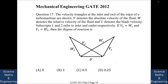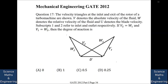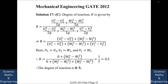For a turbomachine where V2 = W1 and V1 = W2, the degree of reaction is asked. Using the degree of reaction formula R and noting from the velocity triangles that u1 = u2, substituting gives R = (W2² − W1²) / [(W2² − W1²) + (W2² − W1²)] = 1/2 = 0.5. The answer is 0.5.